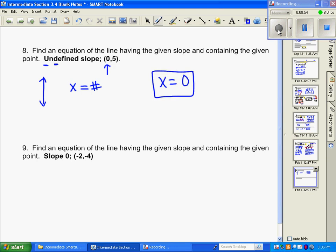And then number 9, they tell us our slope is 0. So a slope of 0 is a horizontal line. All horizontal lines, we know, are y equals some number. Well, then we know our equation is y equals. And the only thing we know about a y value is it goes to the point when the y is negative 4. So our equation for this line is y equals negative 4.